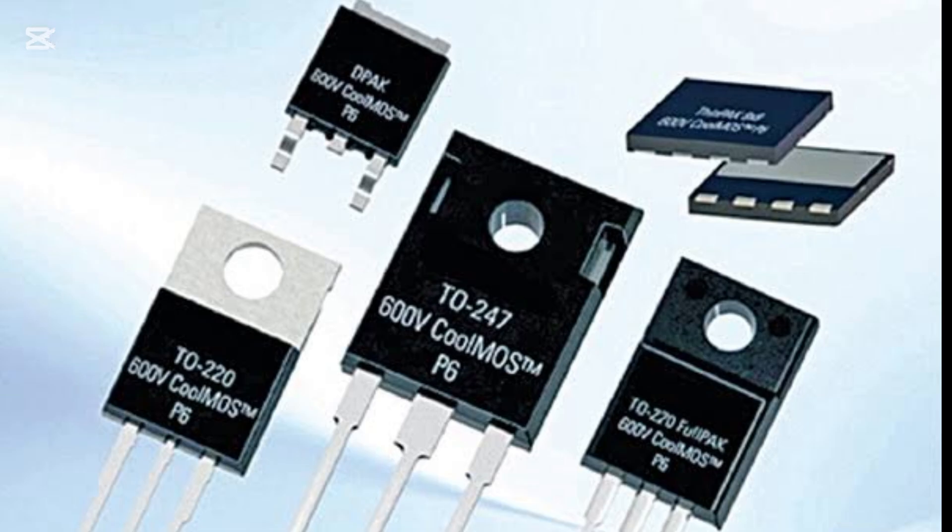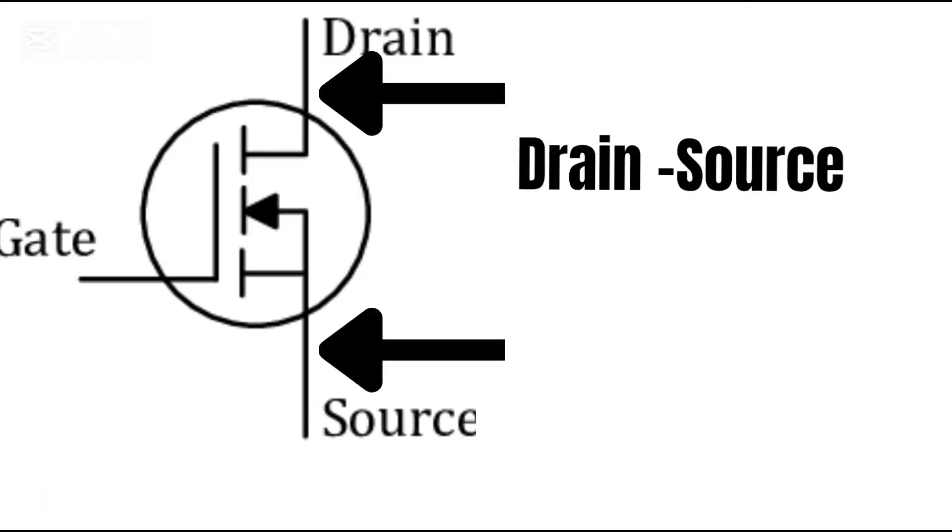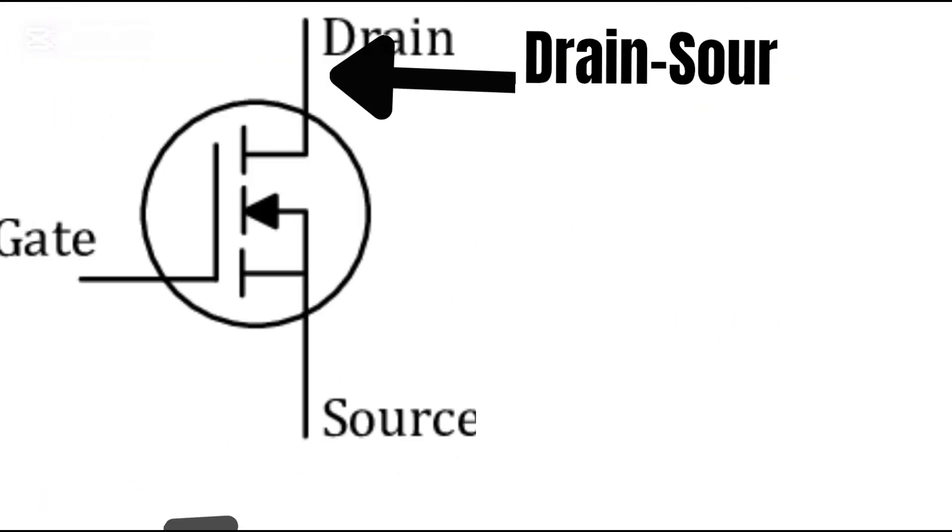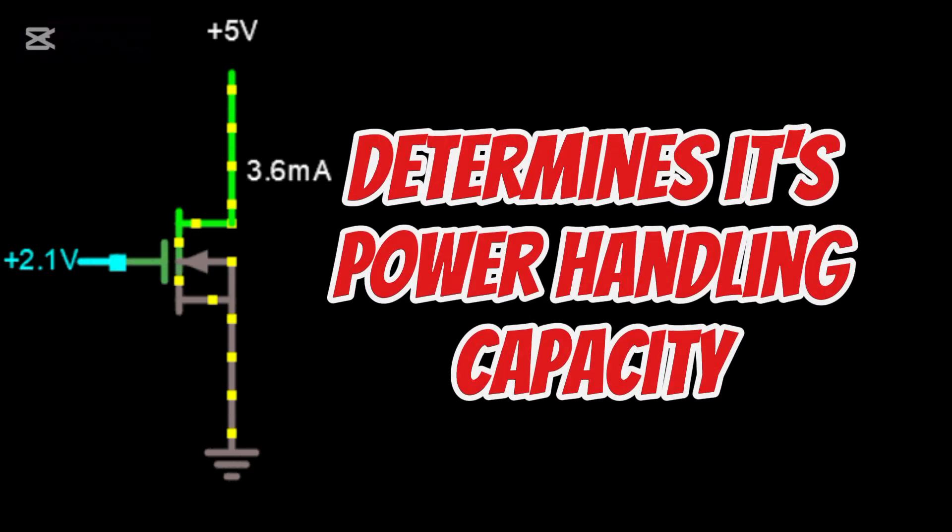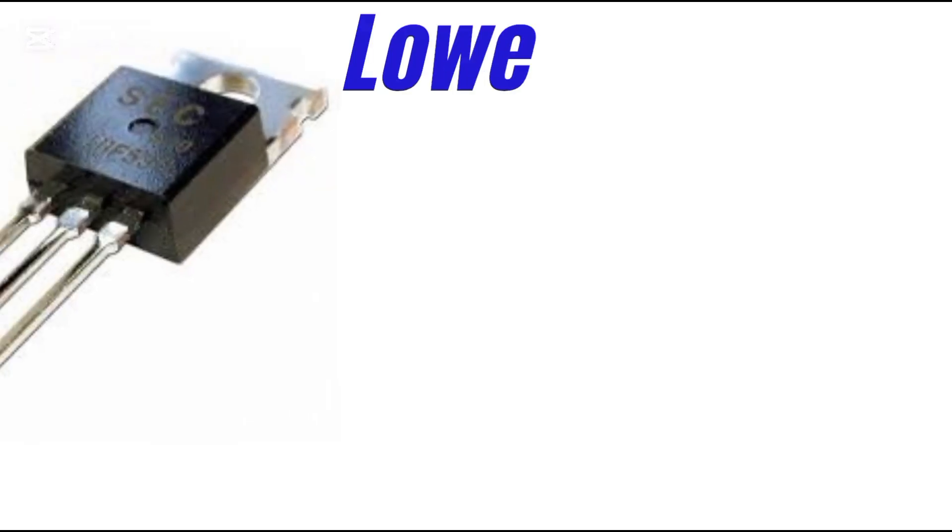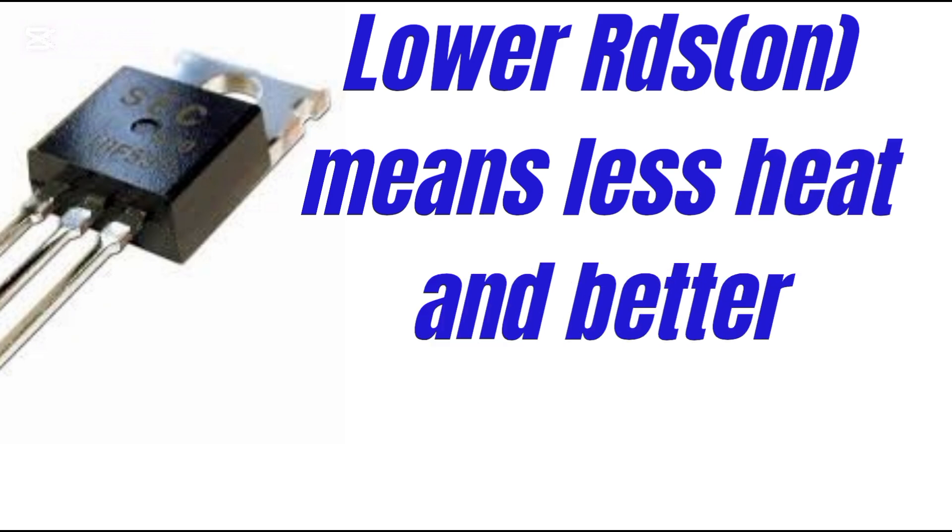When selecting a MOSFET, key parameters must be considered. Drain source resistance, RDS-ON, affects efficiency, while the drain source voltage, VDS, and drain current ID determine its power handling capacity. Lower RDS-ON means less heat and better performance.